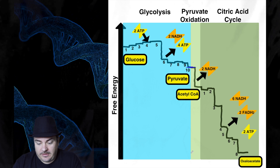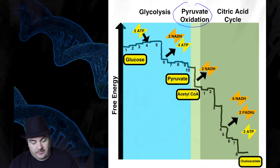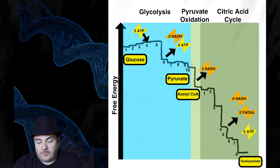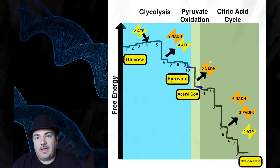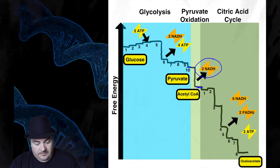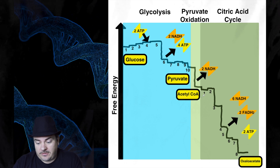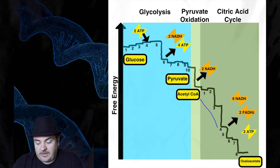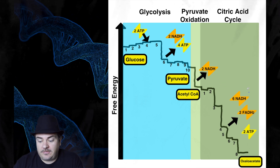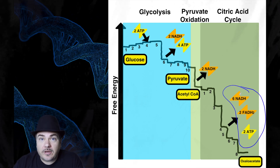Now you have pyruvate, which still stores a lot of energy. Then you do pyruvate oxidation — shown in the light green shaded box — which has 3 chemical reactions. You turn pyruvate into acetyl-CoA. Along the way you release carbon dioxide as waste and charge up 2 NADH batteries. Then you take the 2 acetyl-CoAs and feed them into the citric acid cycle — the darker green shaded box — which is 8 chemical reactions, numbered 1 through 8. You break acetyl-CoA down into oxaloacetate, releasing energy that charges up 6 NADHs, 2 FADH2s, and 2 ATPs.